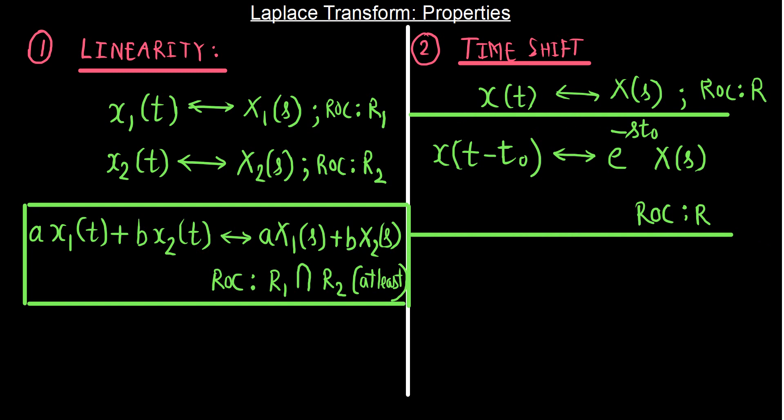The time shift property simply says that if a signal has Laplace transform X(s), then a shifted version gives the same Laplace transform scaled by e^(−st₀). The region of convergence remains the same — shifting a signal does not modify the region of convergence.